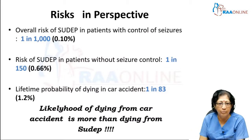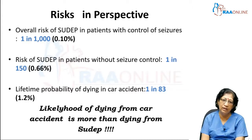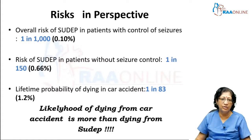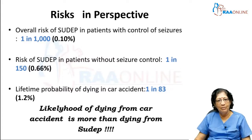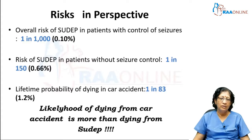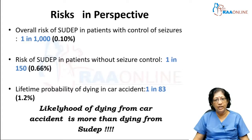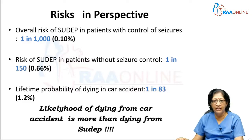When you put the risk in perspective, you will be surprised to know that the lifetime probability of dying in a car accident is much more than the risk of SUDEP in patients with controlled seizures. The overall risk of SUDEP in patients whose seizures are under control is 1 in 150, or 0.6 percent. The lifetime probability of dying in a car accident is 1 in 83, or 1.2 percent. Yet we are still not able to discuss this with the patient and the attender.